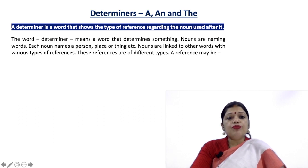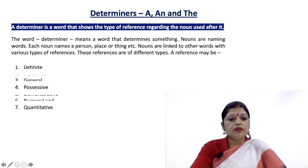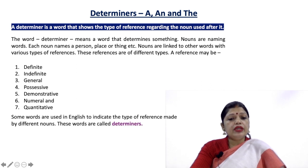These references are of different types. A reference may be definite, indefinite, general, possessive, demonstrative, numeral and quantitative. Some words are used in English to indicate the type of reference made by different nouns. These words are called determiners.